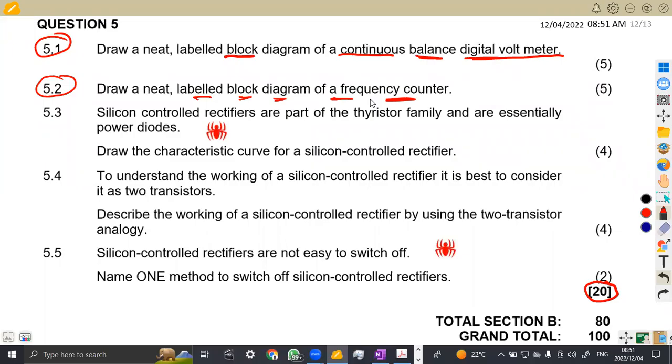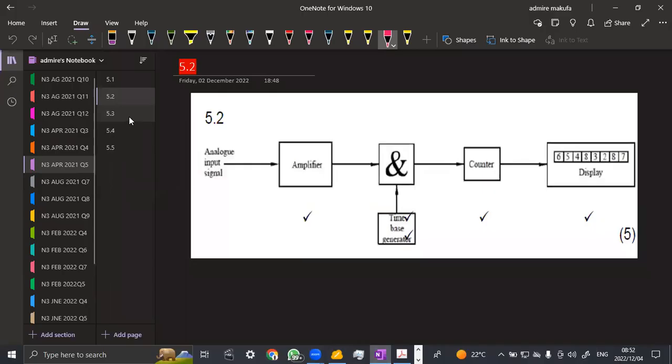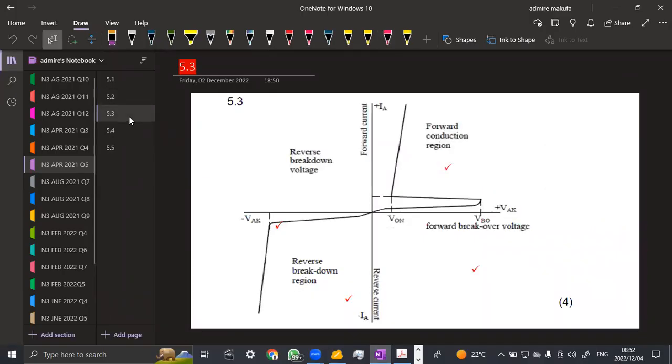5.3 is the same thing. We are given that silicon controlled rectifiers are part of the thyristor family and are essentially power diodes. Draw the characteristic curve. They're just giving you a statement to confuse you, but the question is to draw the characteristic curve for a silicon controlled rectifier.